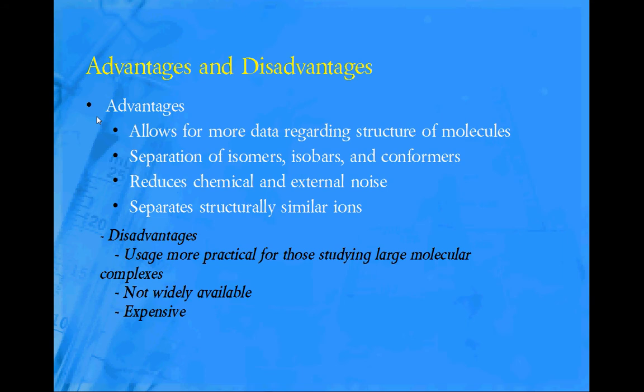The machine itself will separate very accurately isomers or isobars and conformers, so you can discern the differences between molecules that seem almost exactly the same, especially like on a basic mass spectrometer. The combination of these two decreases chemical and external noise because most times scientists would have to transfer from one machine to another. That is going to give you more data and less noise and interferences.